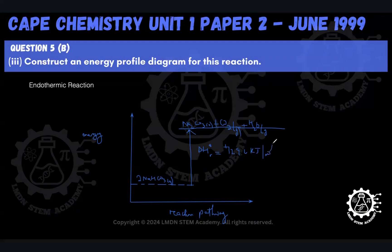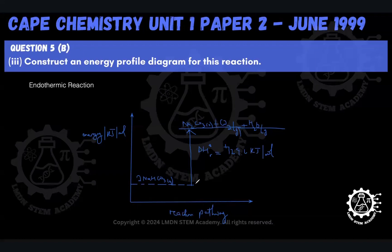We can also label the y-axis with units of kilojoules per mole, and annotate the gap between reactants and products as delta HR equals positive 129.6 kJ/mol. That's all that's required for this energy profile diagram. Definitely subscribe to the channel, like this video, share it with a friend, and comment below if this helped you. Thanks for watching.